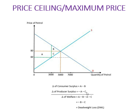The change in total social welfare is the sum of the change in consumer surplus and the change in producer surplus. Adding these two together, the change in welfare is minus B minus C. This means the B and C triangles represent a loss for society, and this loss is known as deadweight loss, or DWL.